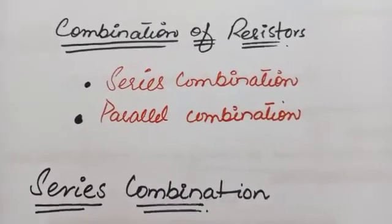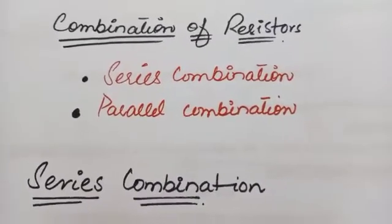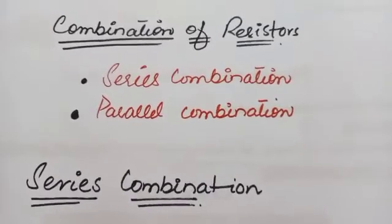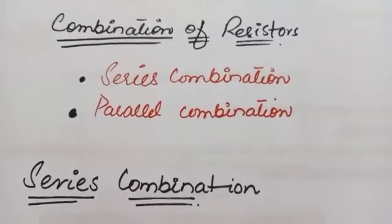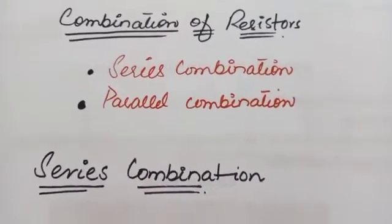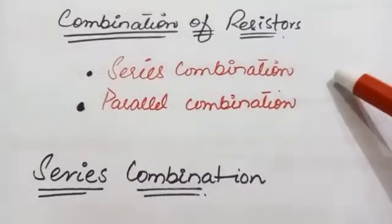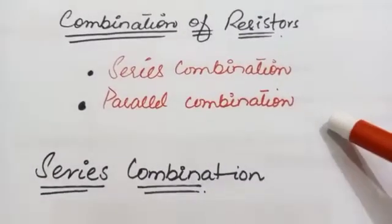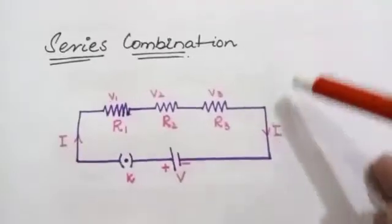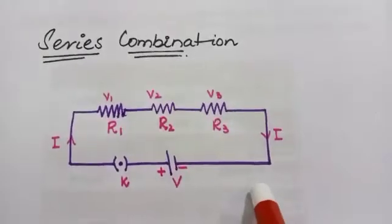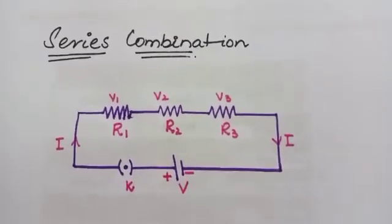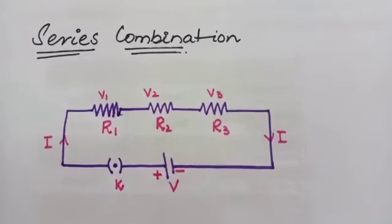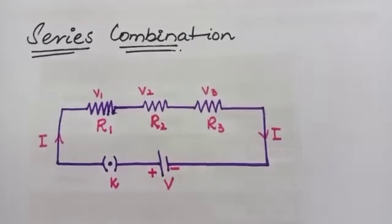The topic we are going to discuss is the combination of resistors. There are two possible ways that resistors are connected in a circuit. The first one is the series combination and the second one is the parallel combination. First we are going to discuss the series combination. This is the circuit diagram for series combination of resistors — there are three resistors connected in series.